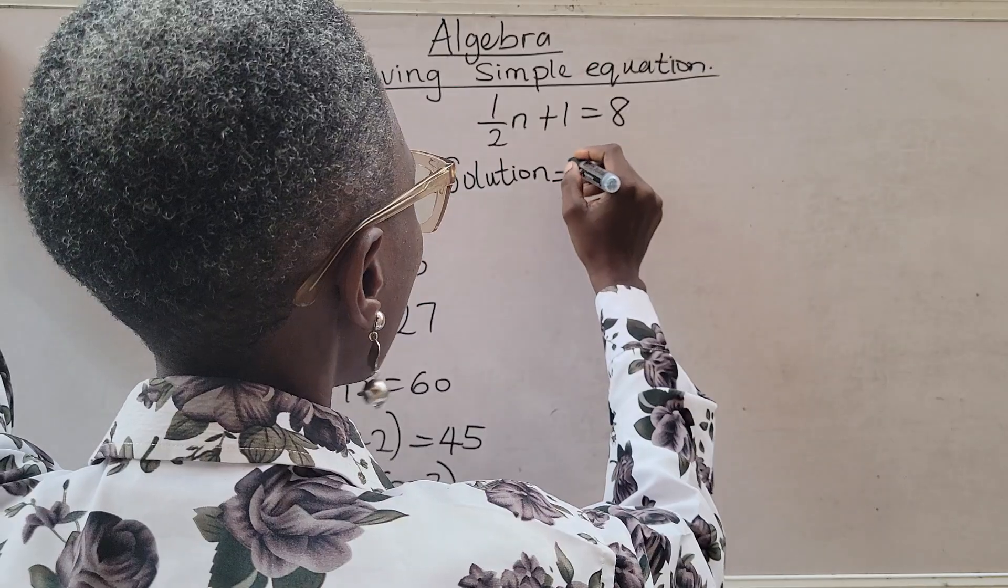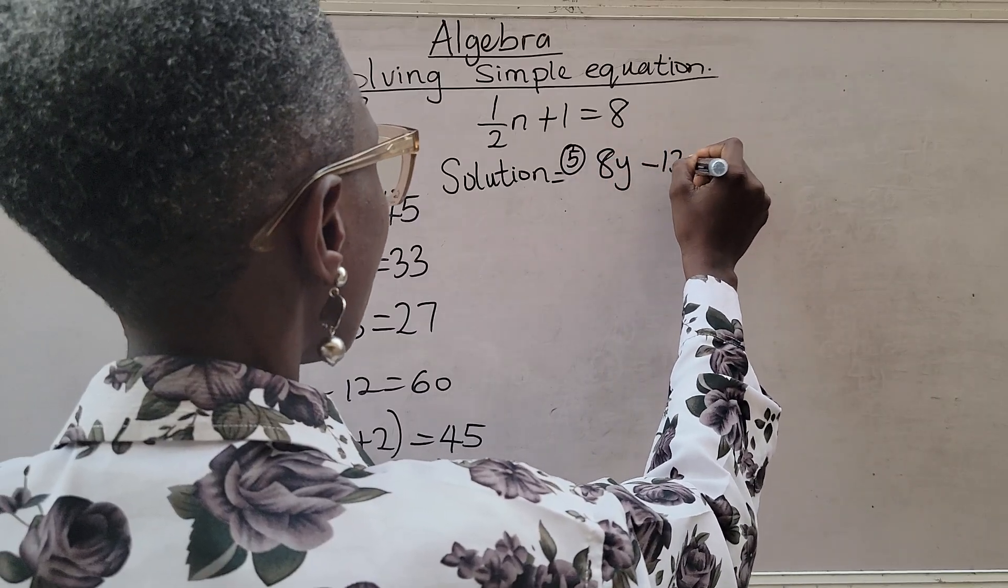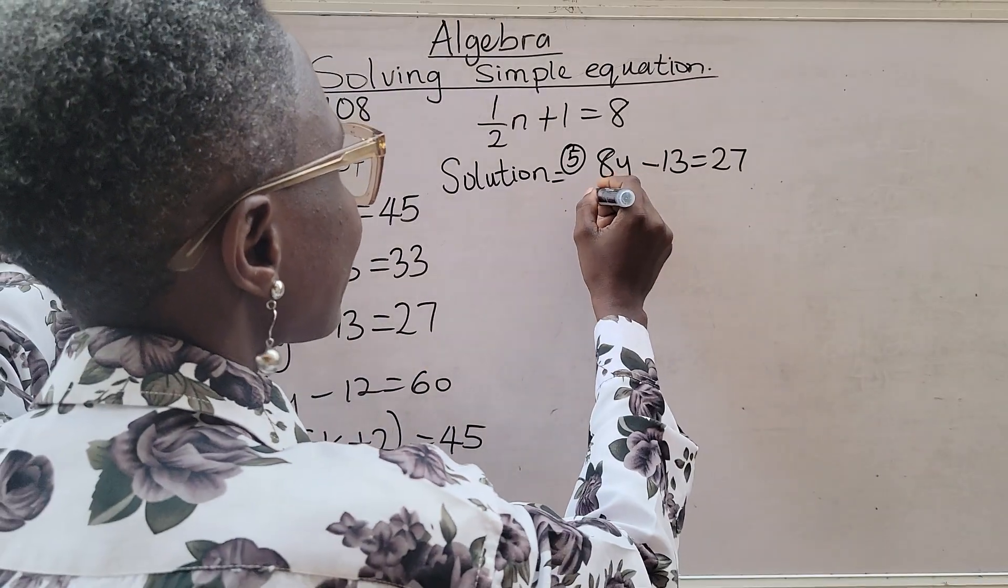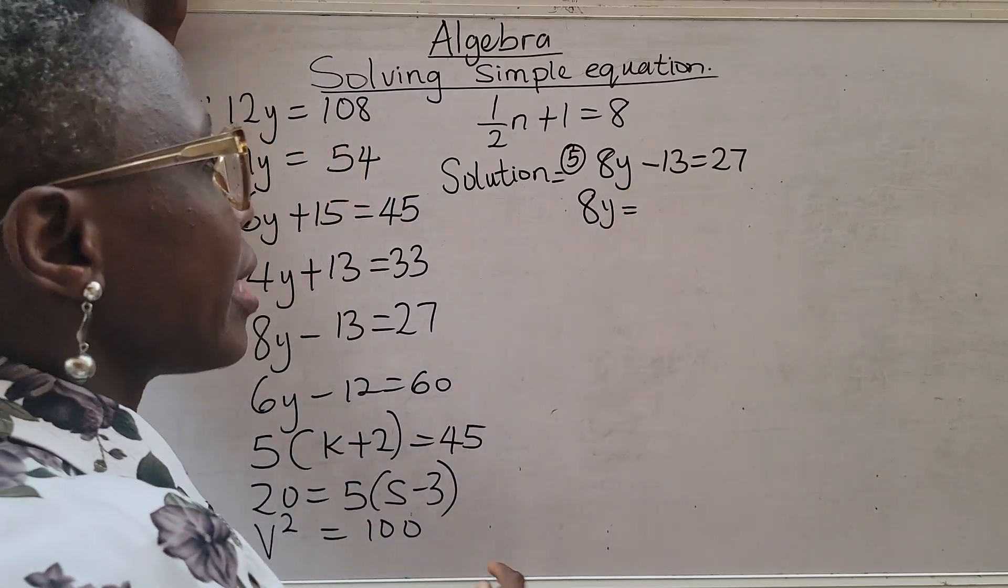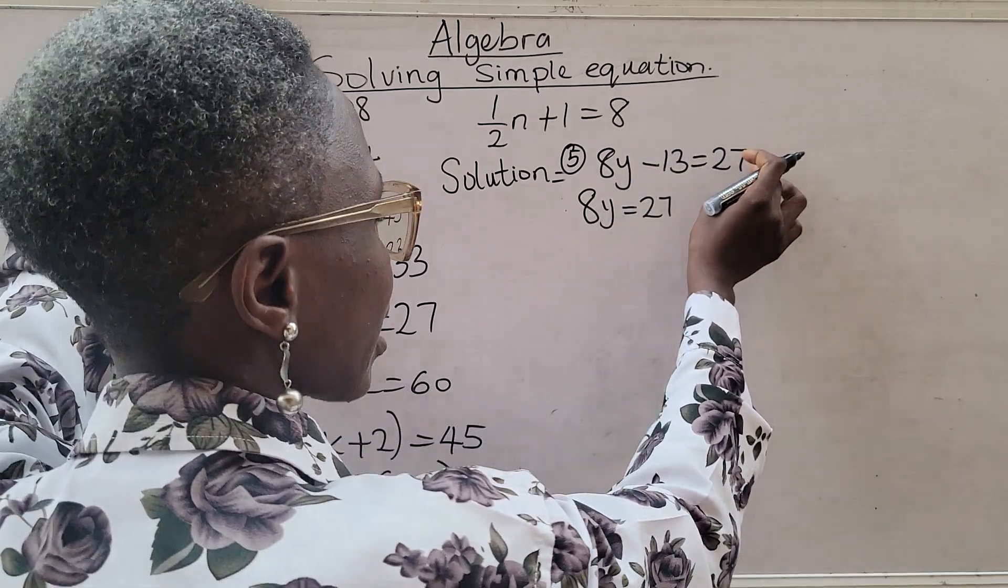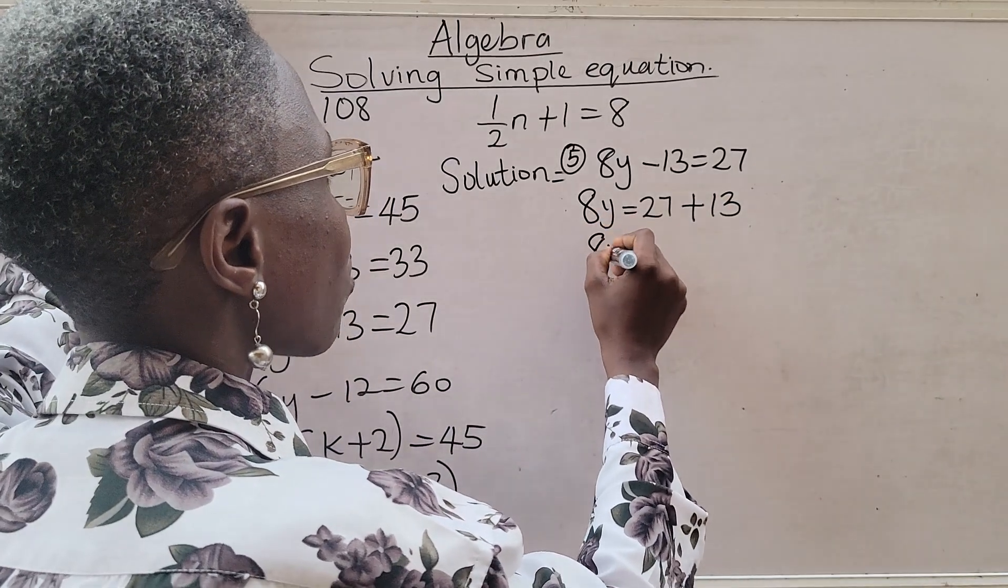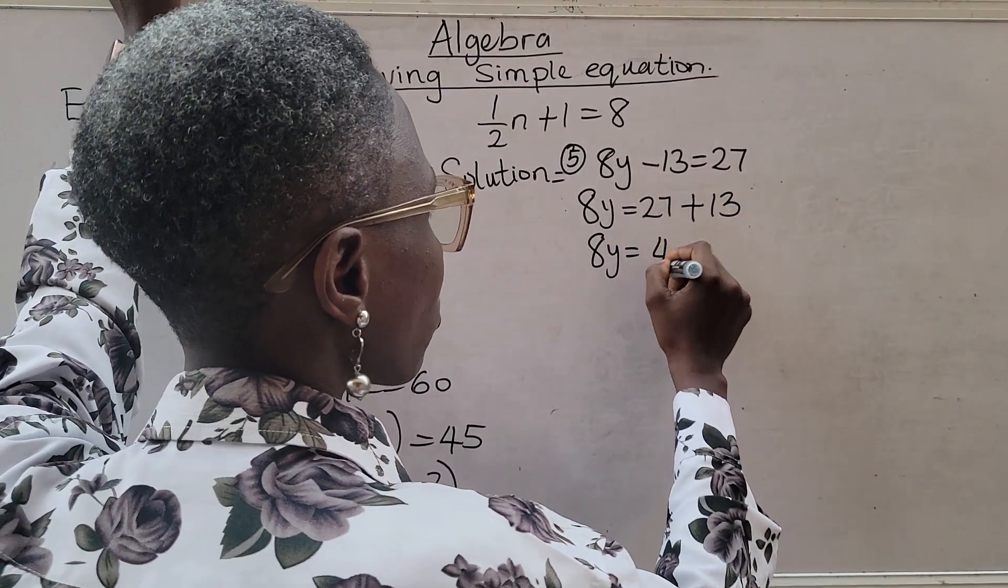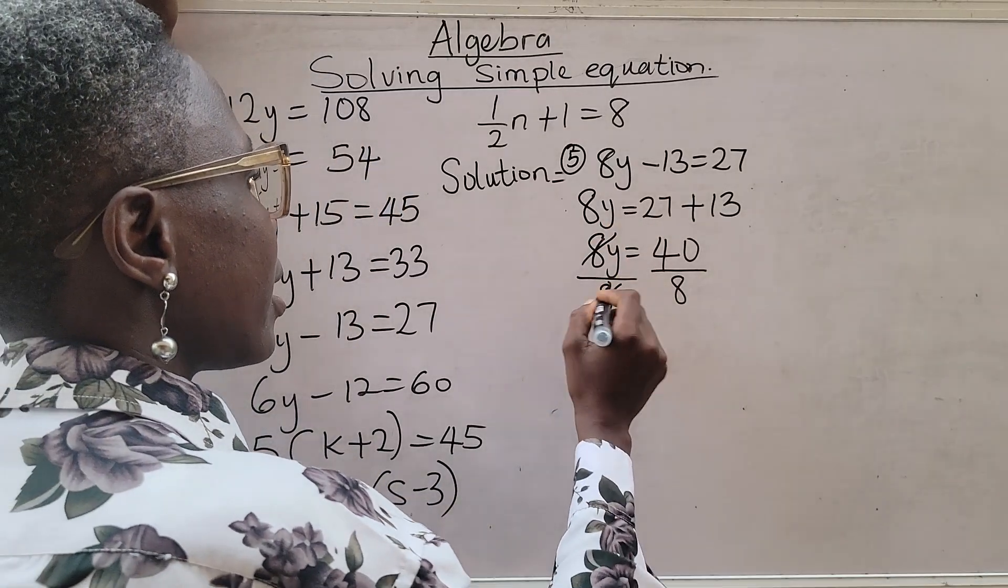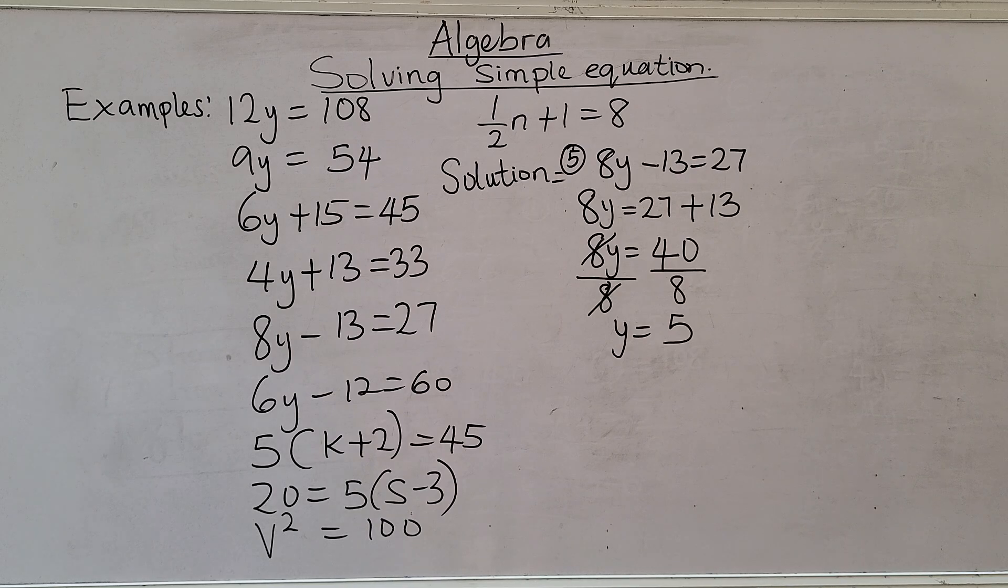So we go to number 5, which is 8y minus 13 equals 27. You are looking for y. Now you will see the other side. 8y - collecting like terms. Then we have 27. This is minus 13. The moment it crosses over to this side, it will turn to plus. So it will be plus 13. So we now have 8y equals 27 plus 13. That's 40. Then we divide both sides by the coefficient of y. 8 is canceling 8. We are left with y. 40 divided by 8. We are left with 5. You can see that it's becoming simpler and simpler.